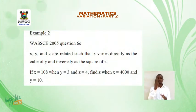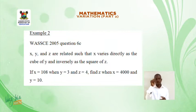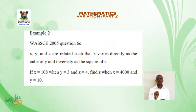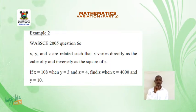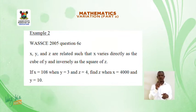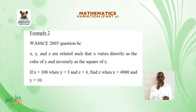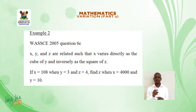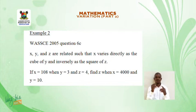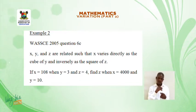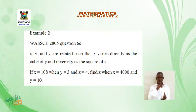Example 2. WAEC 2005, question 6c. X, Y, and Z are related such that X varies directly as the cube of Y and inversely as the square of Z. If X is equal to 108 when Y is equal to 3 and Z is equal to 4, find Z when X is equal to 4000 and Y is equal to 10.